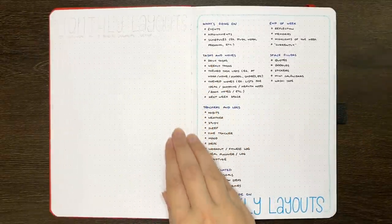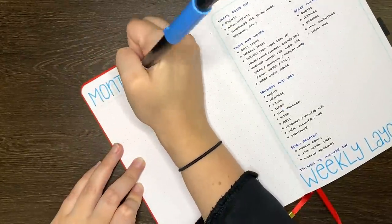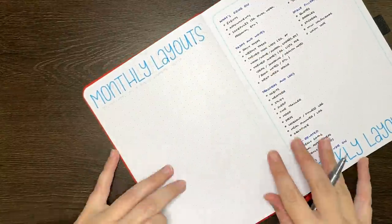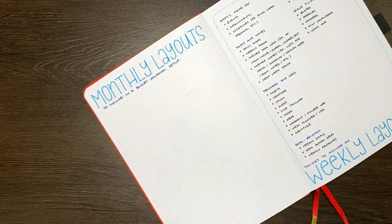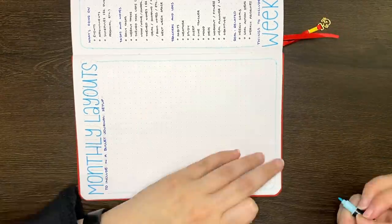Flipping over, though, you can see that I already have half of this spread set up, with a list of ideas of things to include on a weekly layout. On the other side, here I'm transferring in my collection of layouts to include in a monthly setup. Both of these lists I do have as printable versions, links to which can be found in the description box below.